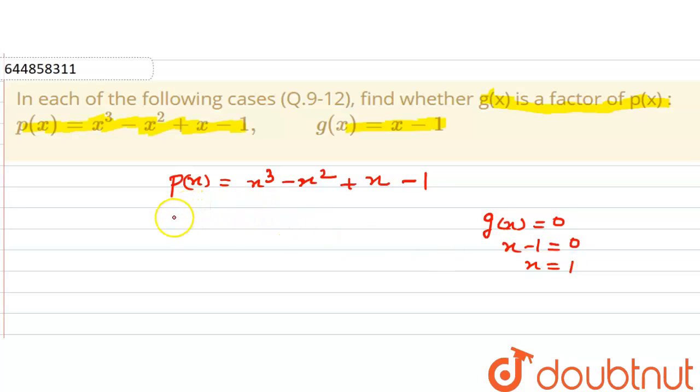Now let us substitute x is equal to 1 in this given expression. So according to the factor theorem, gx will be the factor of px if p of 1 is equal to 0. Now let us find out whether p of 1 is equal to 0 or not.